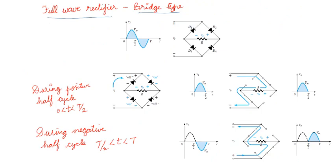Next, we move into the full wave rectifier. Full wave rectifiers are two types: first is the bridge type, the other is the center-tap transformer type. We will start with the bridge type. In bridge type, we have four diodes — D1, D2, D3, D4. The input Vi is a sinusoidal signal with positive and negative halves. The output is taken across resistance R as V0. During the positive half cycle, only diodes D2 and D3 will be on; D1 and D4 are off.